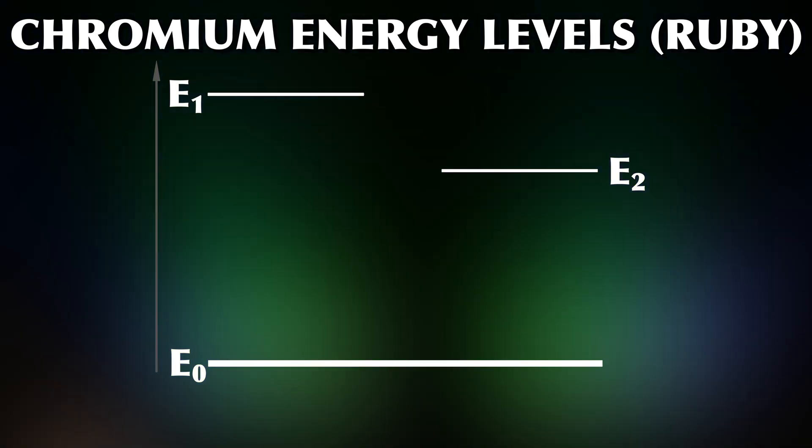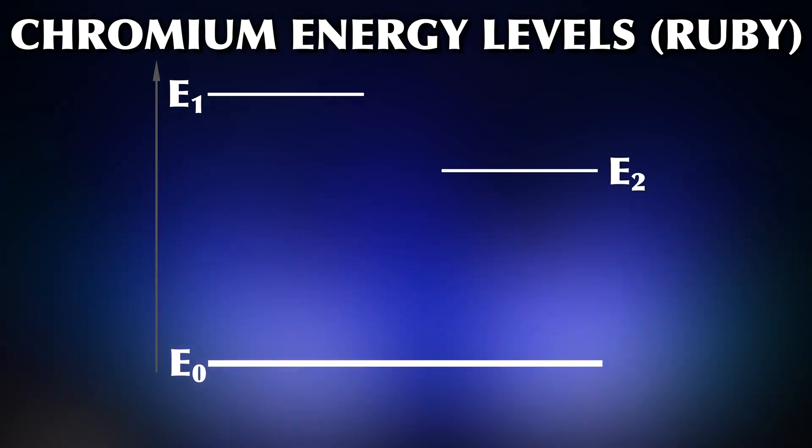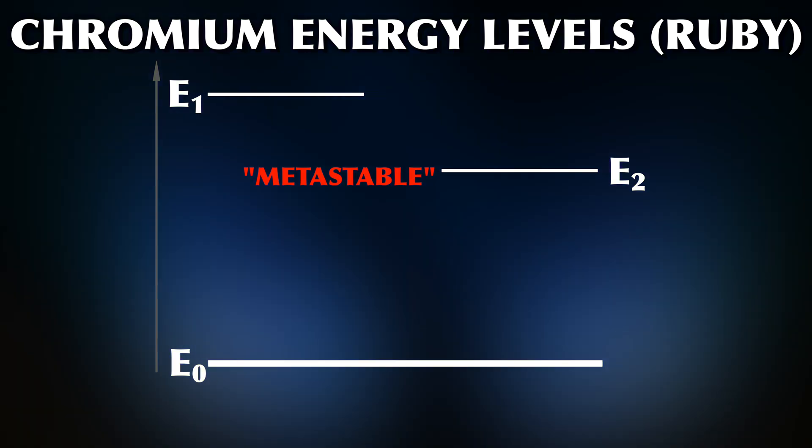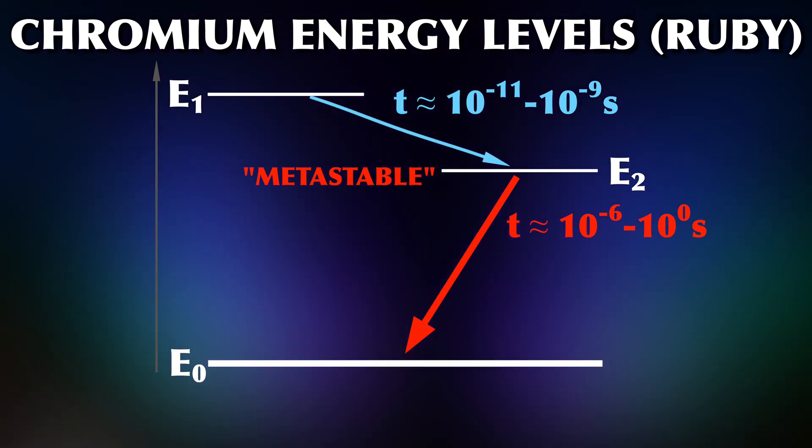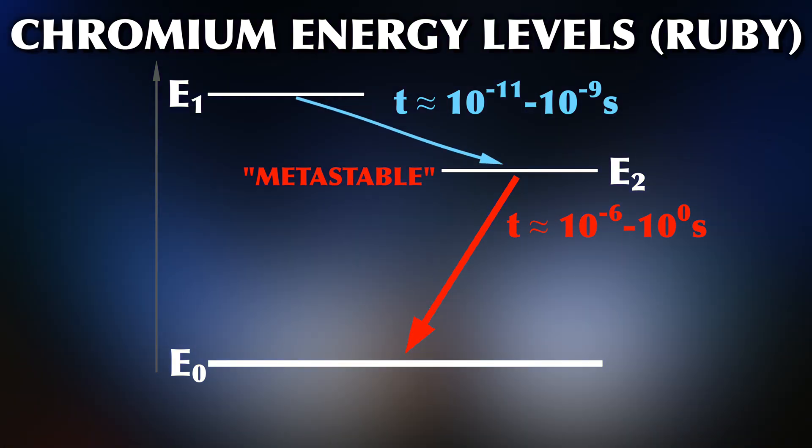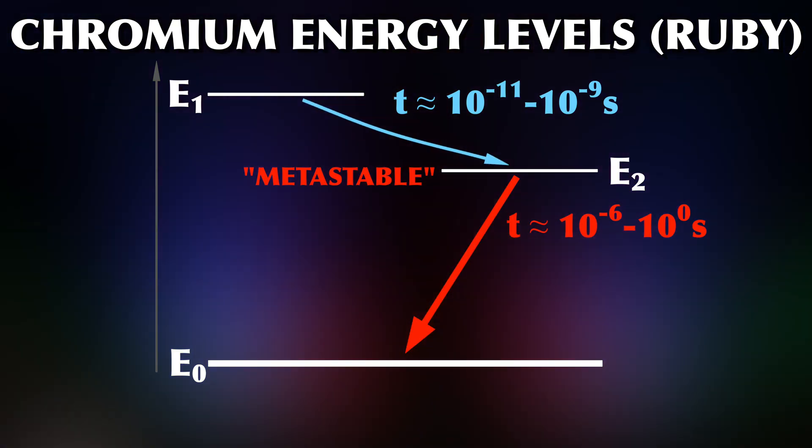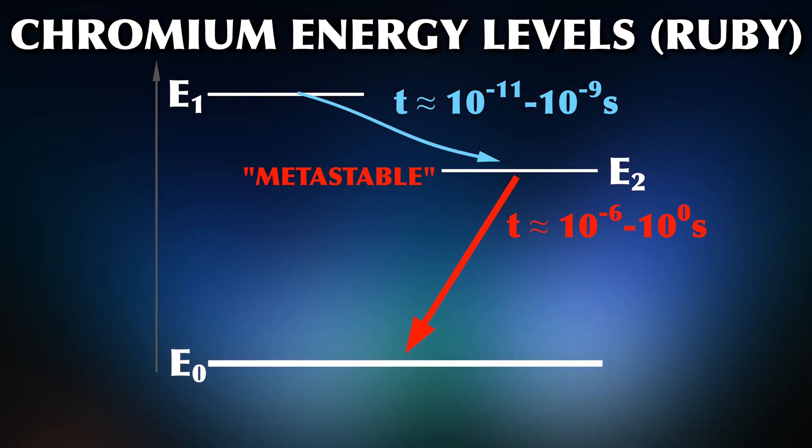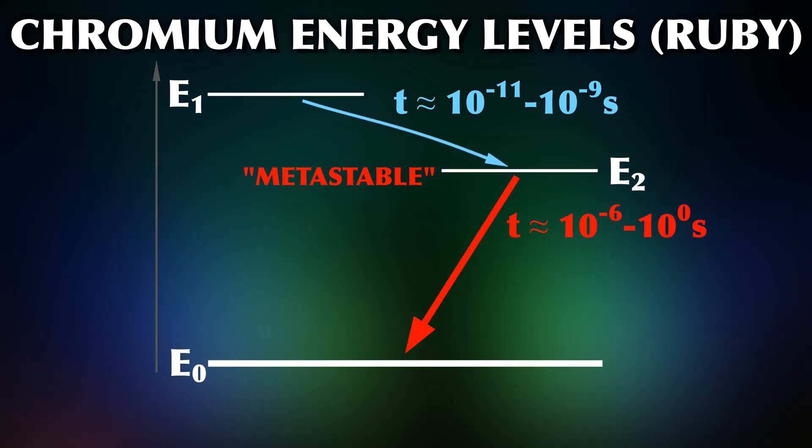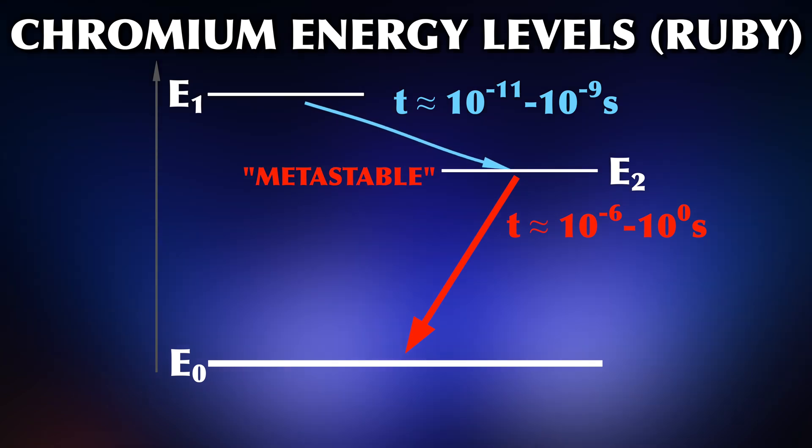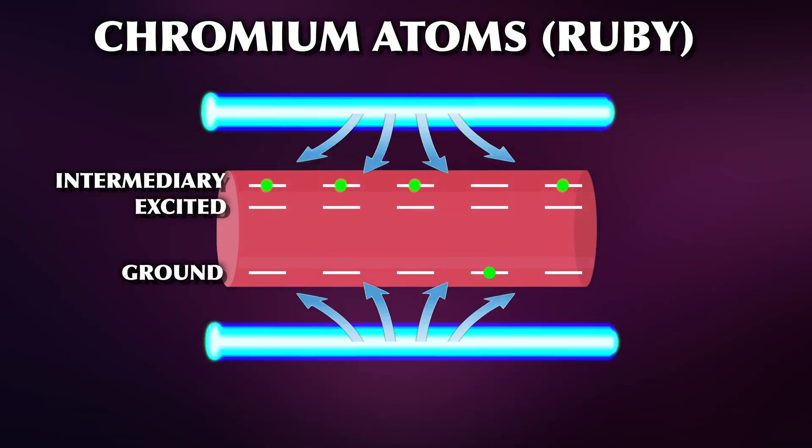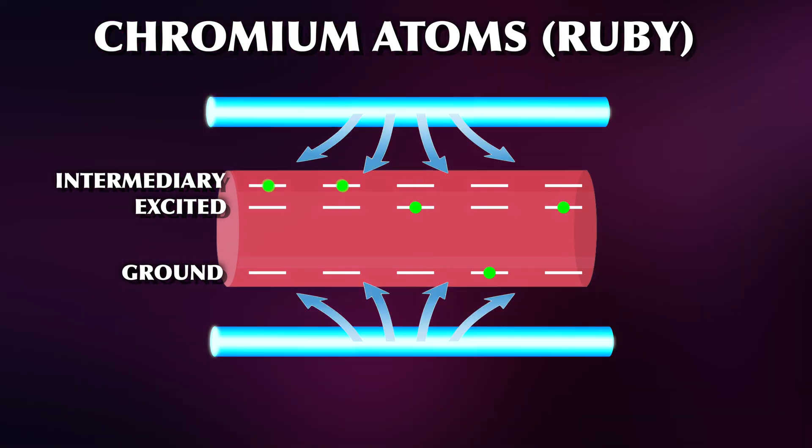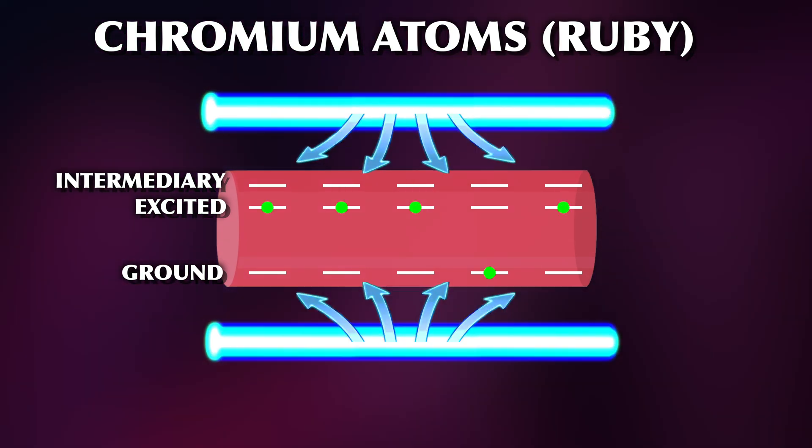Note that this state and the original state have different energies. So you can excite the atom using this energy and stimulate emission with this energy. Secondly, note that the second excited state is a so-called metastable state, meaning the atoms will stay there for a long time. At atomic scales, a long time is seconds. This will help us because the longer they stay there, the more likely it becomes that they are triggered into stimulated emission later. Let's go back to our earlier diagram.